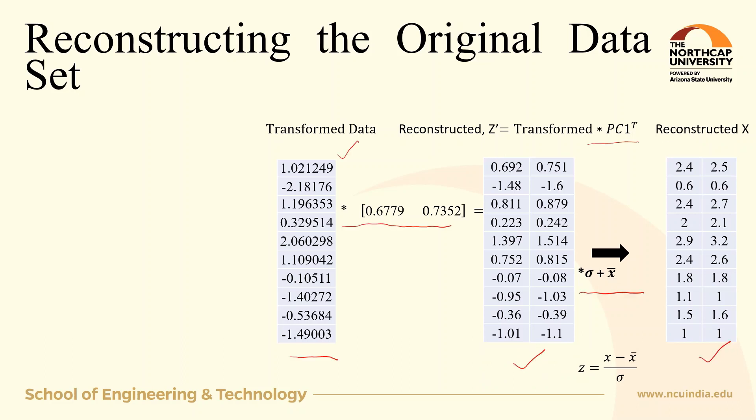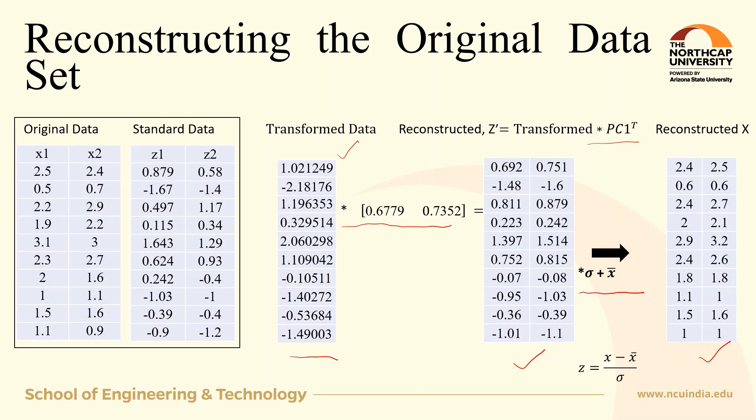If you compare the reconstructed data with the original data matrix, there is hardly any difference. The first row, 2.5 and 2.4 for x1 and x2, is reconstructed as 2.4 and 2.5. The last row, 1.1 and 0.9, is reconstructed as 1 and 1 after reconstruction from the first principal component.